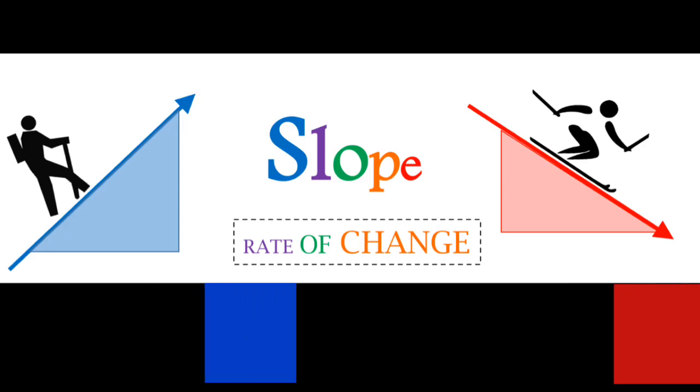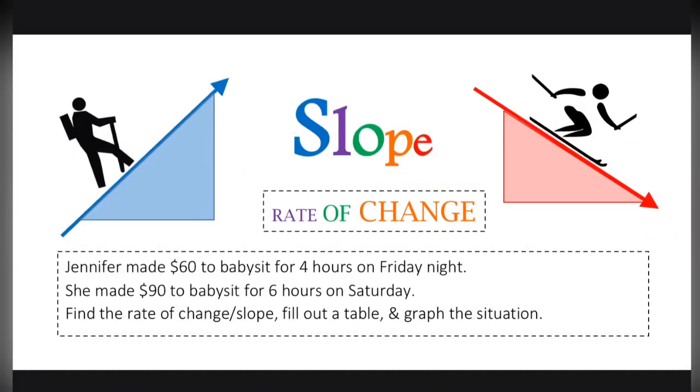Let's look at a real-world situation in which we will find the slope. Jennifer made $60 to babysit for 4 hours on Friday night. She made $90 to babysit for 6 hours on Saturday night. We're going to find the rate of change or slope, fill out a table, and graph the situation because there are many ways to find slope.